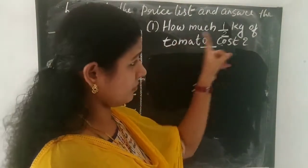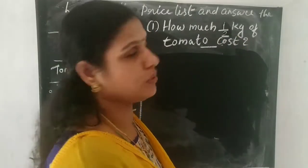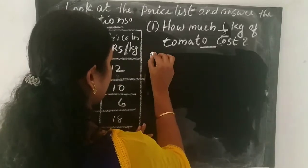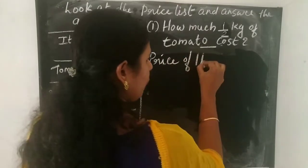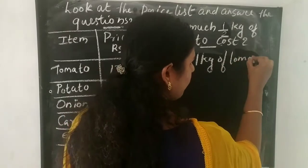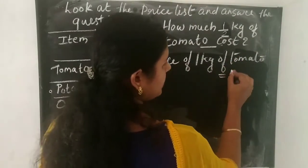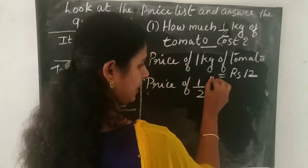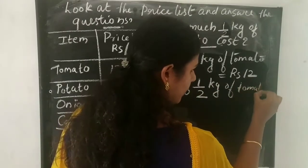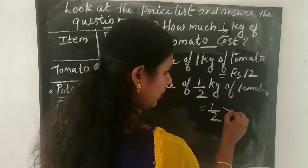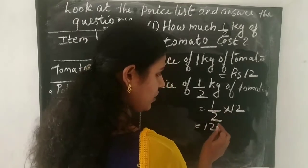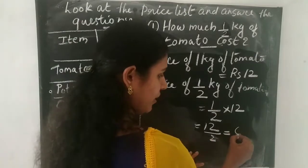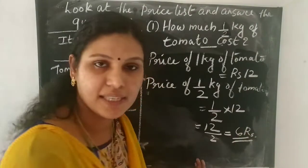Next, we have to find the cost of half kg of tomato, that is 1 by 2 kg of tomato. We know the price of 1 kg of tomato is 12 rupees. So the price of half kg is 1 by 2 into 12, which equals 12 divided by 2. Since 6 twos are 12, we get the answer as 6 rupees.